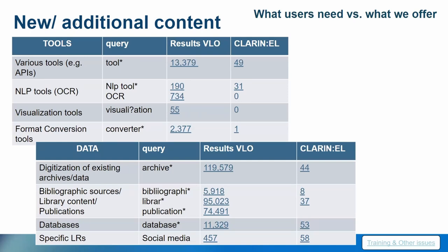The most important recorded need is for new content. Participants state they primarily need tools with various functions and APIs, without specifying which tools. They also require specialized tools for NLP processing and OCR to handle both printed and handwritten Greek text and images such as manuscripts. Additionally, visualization tools and conversion services are in high demand.